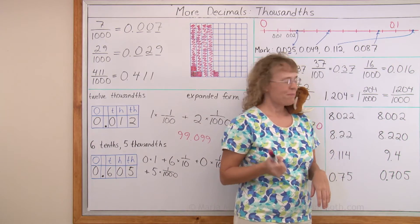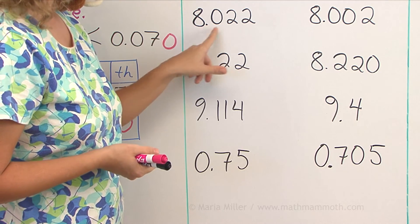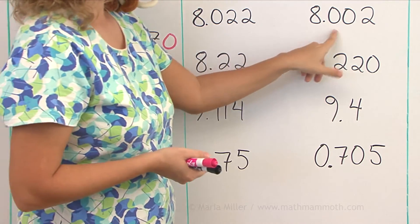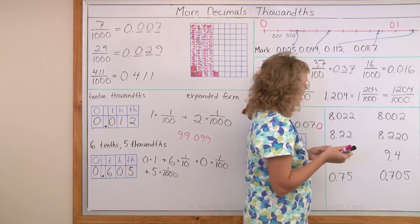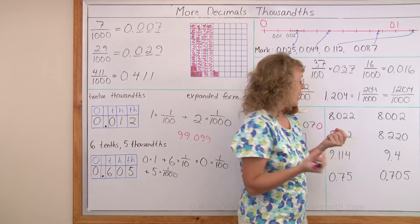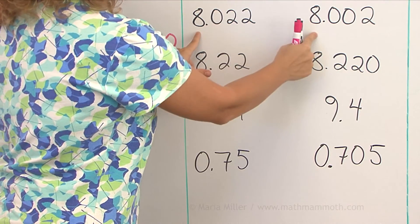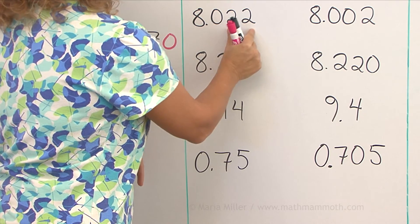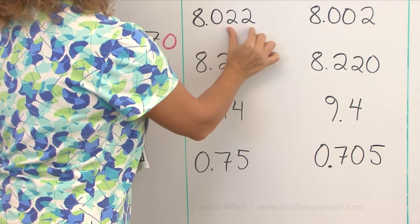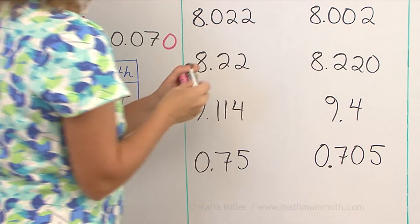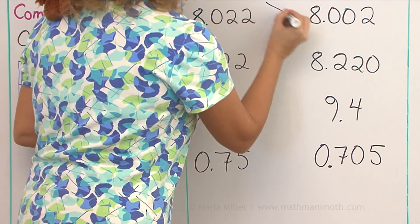Let's compare some more. Over here I have eight point zero two two, eight point zero zero two. Both of them are the same length, or they have the same number of decimal digits. Here we have eight, and then we have twenty-two, twenty-two thousandths, and two thousandths. So that's easy, right? Obviously twenty-two is more than two.